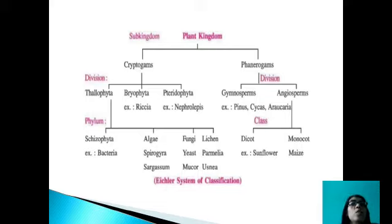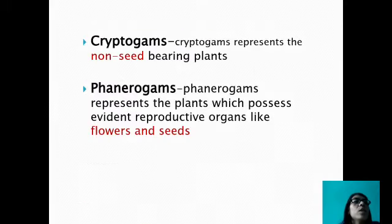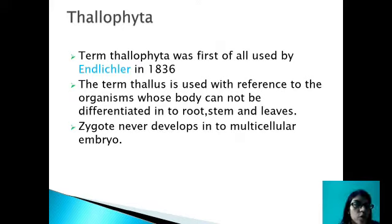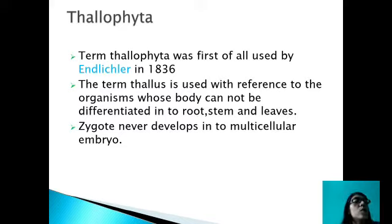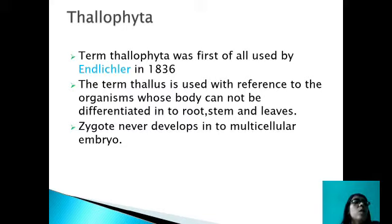Cryptogames is divided into three divisions: Thallophyta, and others. Thallophyta is a plant group in which all the plants have a thaloid body and do not have an embryo. Thaloid plant body means the plant body is not differentiated into root, stem, and leaf. Normally when we talk about plants we think the plant body is always differentiated into root, stem, and leaf, but it is not true. There are many plants in kingdom Plantae which do not have root, stem, and leaf, and such plants are included in Thallophyta.